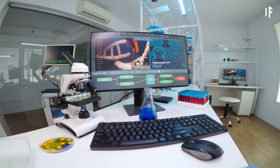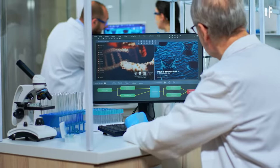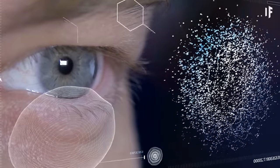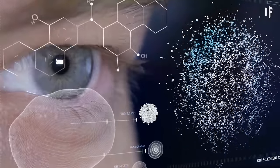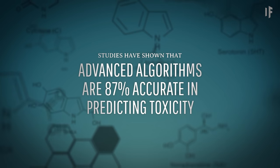By looking at their structural similarities, researchers can predict the toxicity of untested chemicals. And studies have shown that advanced algorithms are 87% accurate in predicting toxicity.